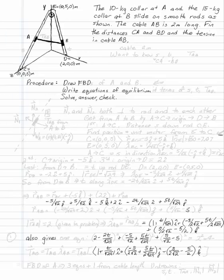The 10-kilogram collar at A and the 15-kilogram collar at B slide on smooth rods as shown. The cable AB is 2 meters long, and what we want to know is the distances CA and BD — call CA 'S' and BD 'T' — and also the tension in the cable TAB. The procedure, as always, is to draw free-body diagrams, write equations of equilibrium, solve, answer, and check.